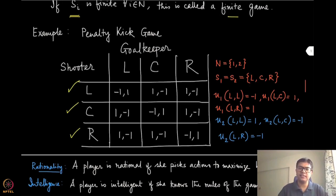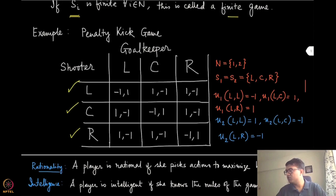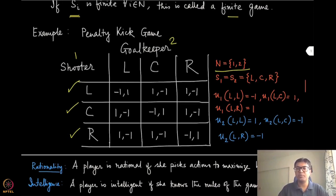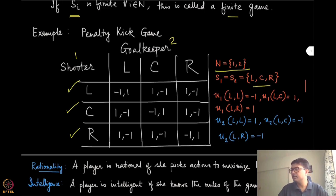What is the representation of this game in normal form using our notation? Clearly there are only two players — the shooter and the goalkeeper. Let us number them one and two, where shooter is player one and goalkeeper is player two. The strategy sets S_1 and S_2 are the same for both players, comprising three elements: L, C, and R — left, center, and right.